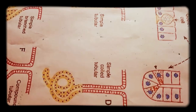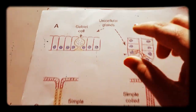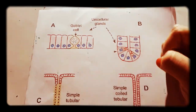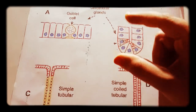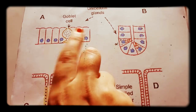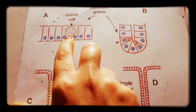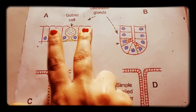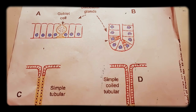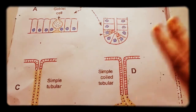We also discussed unicellular and multicellular glands. Unicellular exocrine glands are single secretory cells — like goblet cells — which are secretory but not organized into a gland structure. Multicellular glands, such as salivary glands, are made entirely of epithelium where all cells are secretory.